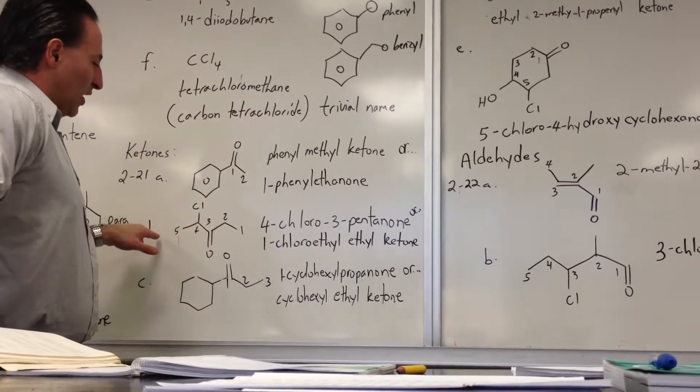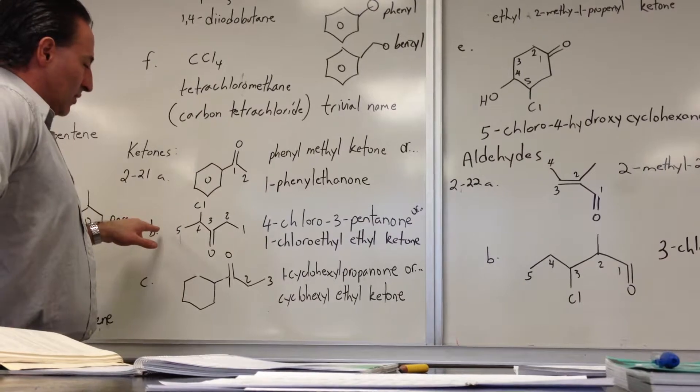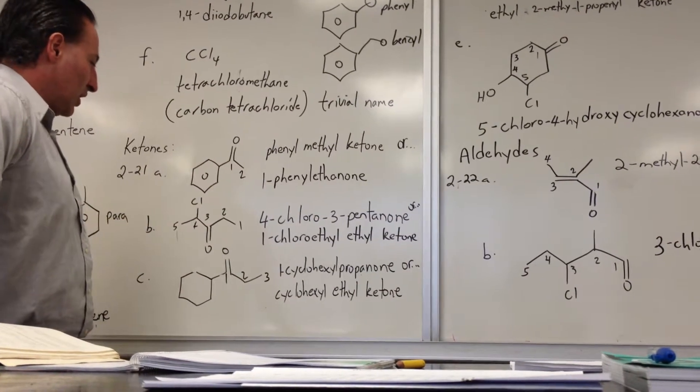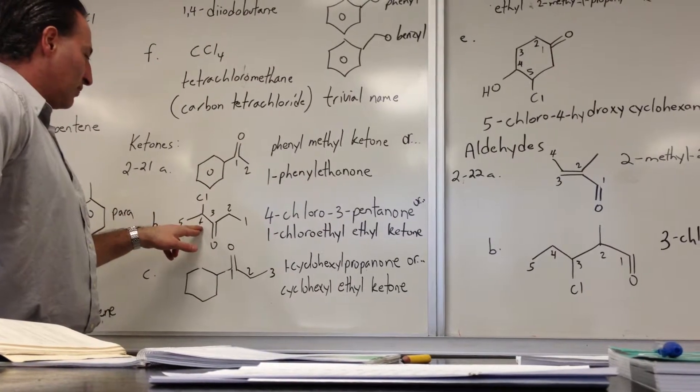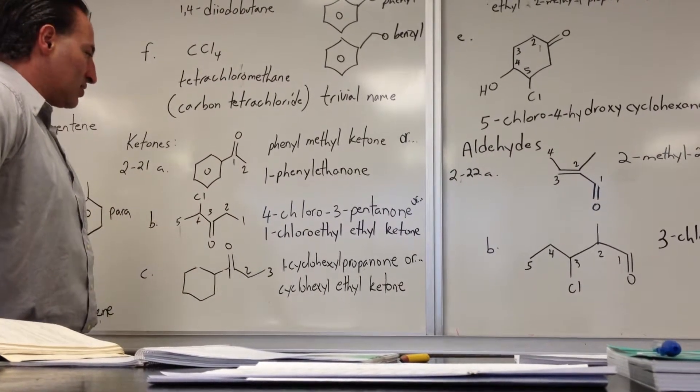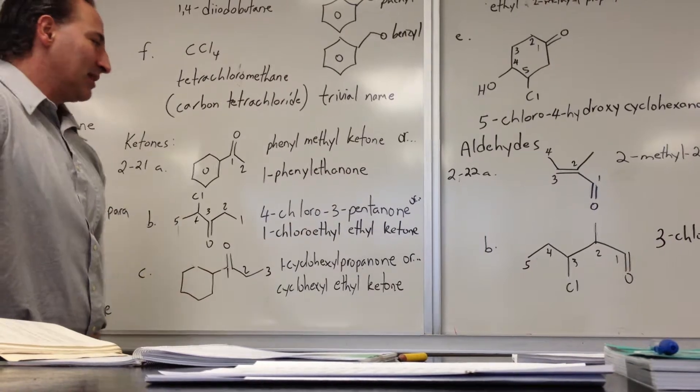This shows a molecule with five carbons, a five-carbon chain along its longest chain. There's a ketone at the third position, chlorine at the fourth. Ketones take precedence over halides, so you would call it 4-chloro-3-pentanone.